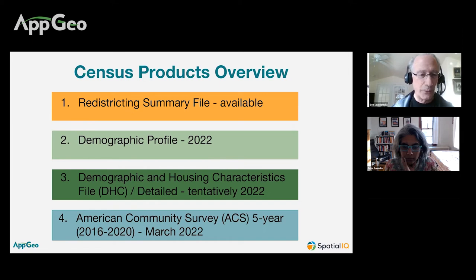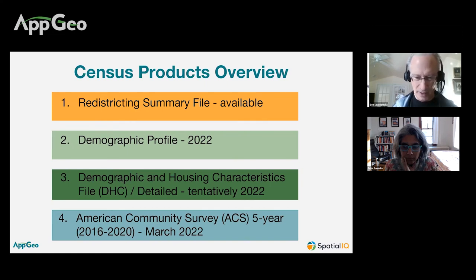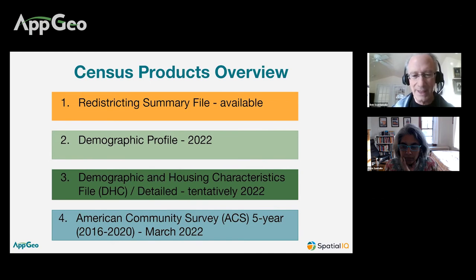Number three, the demographic and housing characteristics file — this is reflective of the demographic profile but much more detailed, and also tentatively 2022. What I've learned in all my years working with the Census is don't ever pin them down to a release date, because they are under a lot of pressure from statistical operations processing to make this data available. The Census Bureau's timing was totally thrown off by the pandemic. Their operations were put on hold back in March of 2020, and it was three months before most operations got back in swing. We would have had a lot of this data by now in a normal census year.